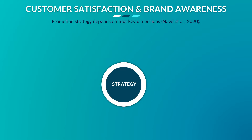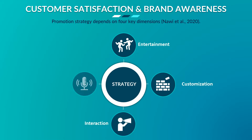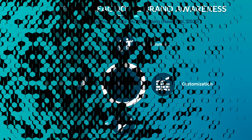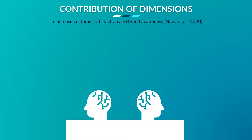I have identified that there are four key dimensions: entertainment, customization, interaction, and electronic word of mouth. These are the most prevalent methods used to trigger the interest of their targeted audience. I can choose to follow similar strategies to that of the established brands, but by doing this I won't be able to create a good brand image for repeat sales. This is because I am not sure how the four key dimensions will impact the strategy in our case.